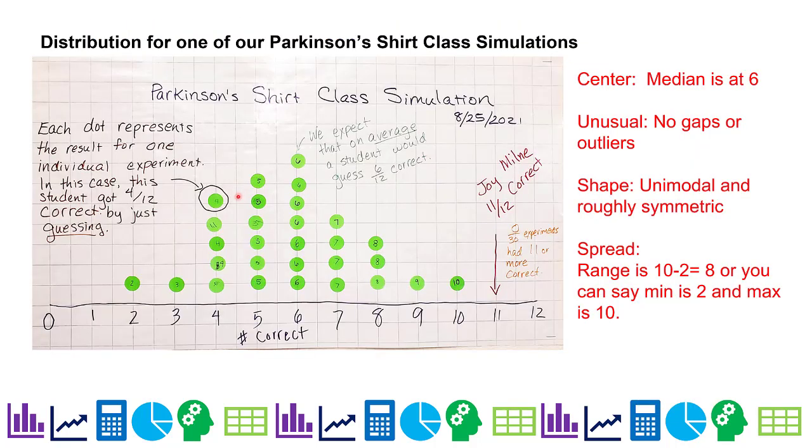Here's another example of the distribution. This is a Parkinson's shirt class simulation from a previous year. The center, the median, I went ahead and calculated it, is at 6. There are no gaps or unusual features, no outliers.